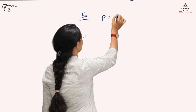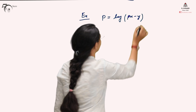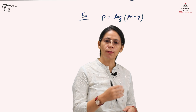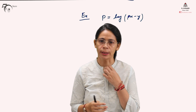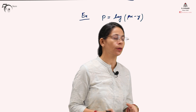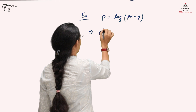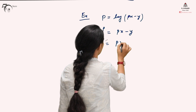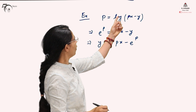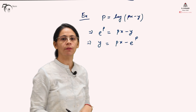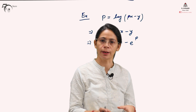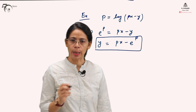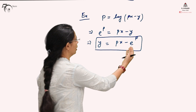Example 2: the given differential equation is p equals log(px minus y). Comparing it with the standard Claret's form, it is not in that form directly. But we can rewrite it: e^p equals px minus y, so y equals px minus e^p. In this transformed form, we cannot replace p with c unless we verify that the equation is in Claret's form.